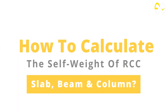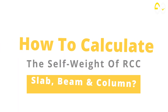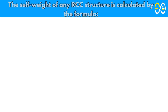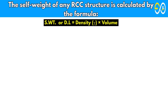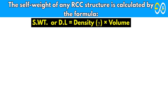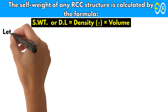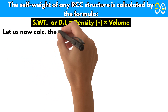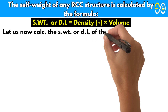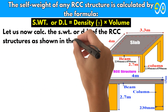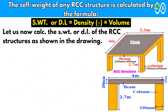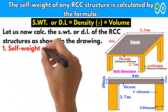How to calculate the self-weight of RCC slab, beam, and column. The self-weight of any RCC structure is calculated by the formula: self-weight or dead load equals density times volume. Let us now calculate the self-weight or dead load of the RCC structures as shown in the drawing.